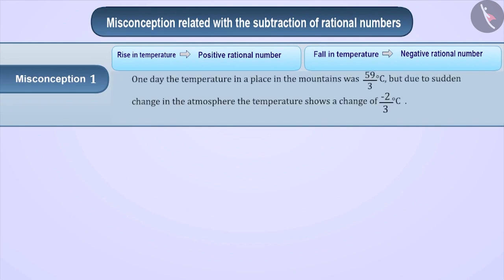One day, the temperature in a place in the mountains was 59 by 3 degrees centigrade, but due to sudden change in atmosphere, the temperature shows a change of minus 2 by 3 degrees centigrade. What will be the temperature after the change?